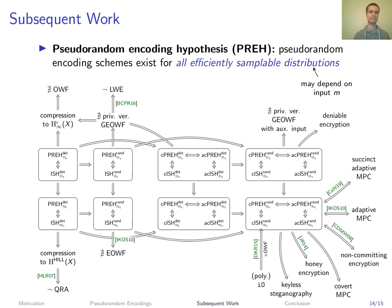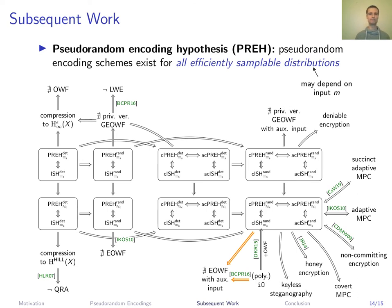We also have subsequent work: for the weakest notion of pseudorandom encodings, we have not only a positive result but also a negative result based on extractable one-way functions with unbounded auxiliary input. Due to Bitansky et al., this notion is also contradictory to indistinguishability obfuscation. Therefore, we asked whether PRE for all efficiently sampleable distributions can be achieved from anything that does not already imply I.O. Very recently, we and Wix settled this question by proposing a new I.O. construction from pseudorandom encodings and LWE, using a very restricted form of oblivious sampling for LWE.